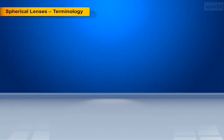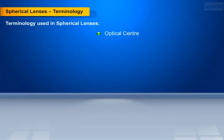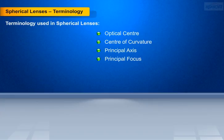Before we move on to spherical lenses in detail, let us know about the terms that are used in spherical lenses: optical center, center of curvature, principal axis, principal focus, and focal length. Now let's study about each one in detail.